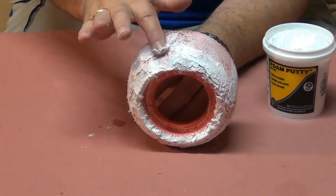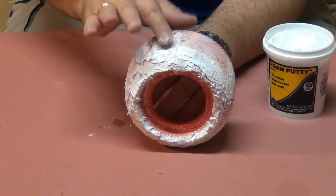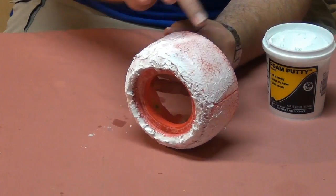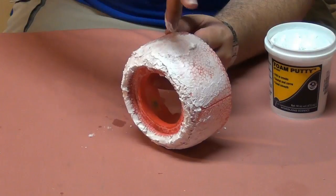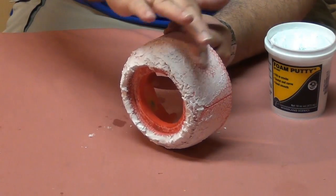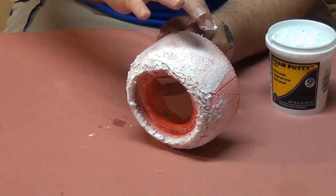Whether you're using the foam putty brand, the lightweight spackle, or the lightweight filler, it all works pretty much the same way. Now that I'm just about done with this, I'm going to finish that up and then go to the wing tips where I've also had that same kind of damage and get the putty on that so I can get that drying as well.